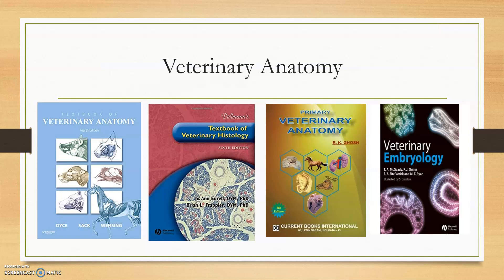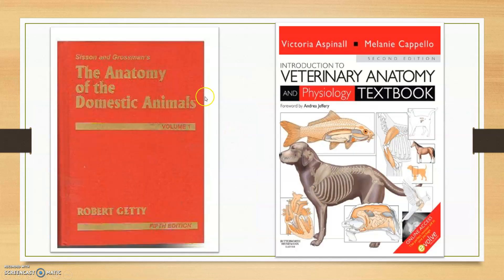For the first years, veterinary anatomy — the Dyce Sack, Dellmann's Histology, and Archegosh Veterinary Anatomy. For embryology, the Fitzpatrick book. These are very important books. I have referred to Archegosh and Dyce Sack many times for images. Sisson and Grossman is also a very important anatomy book — there are three volumes.